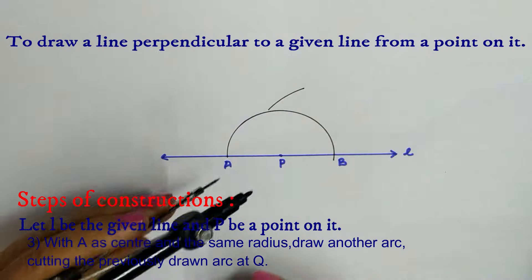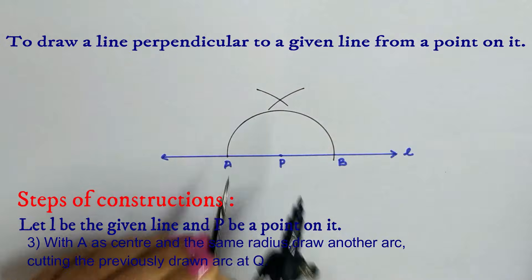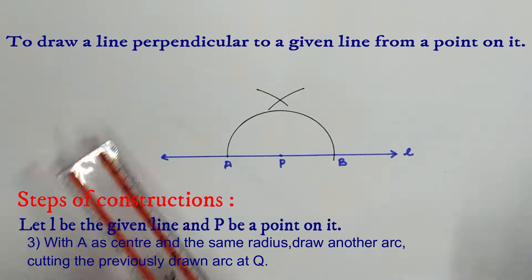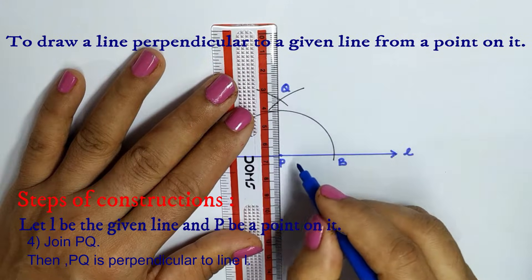Now with the same radius and A as center draw another arc cutting the previously drawn arc. Let this point be Q. Join PQ.